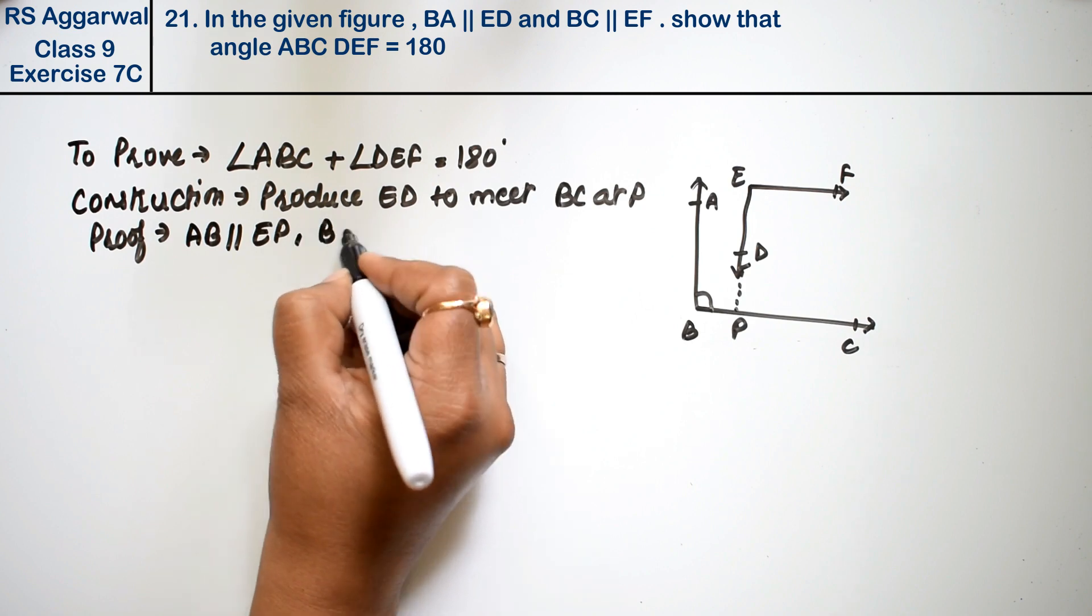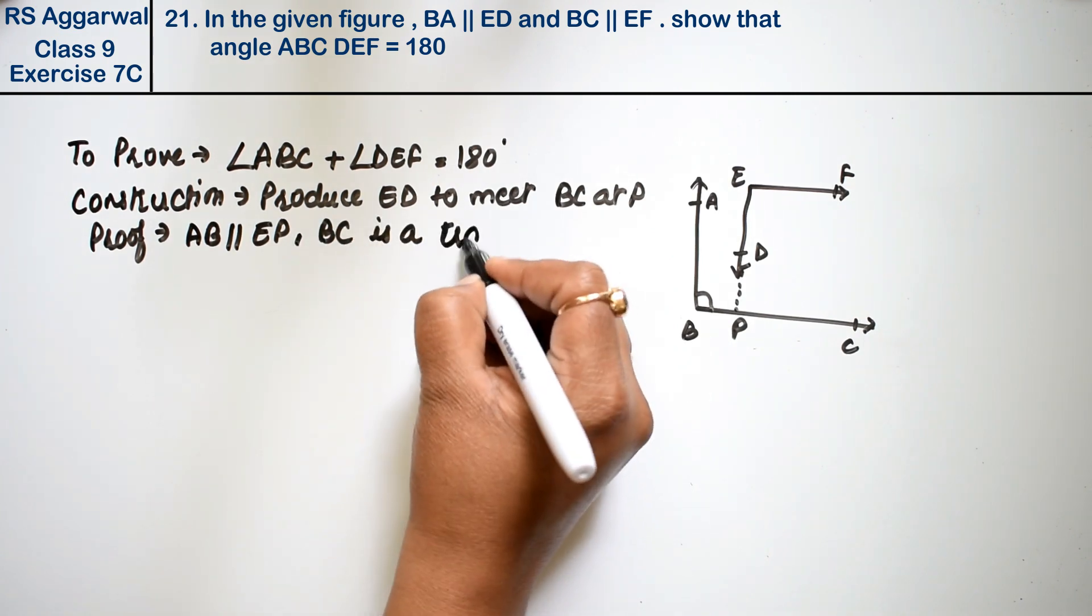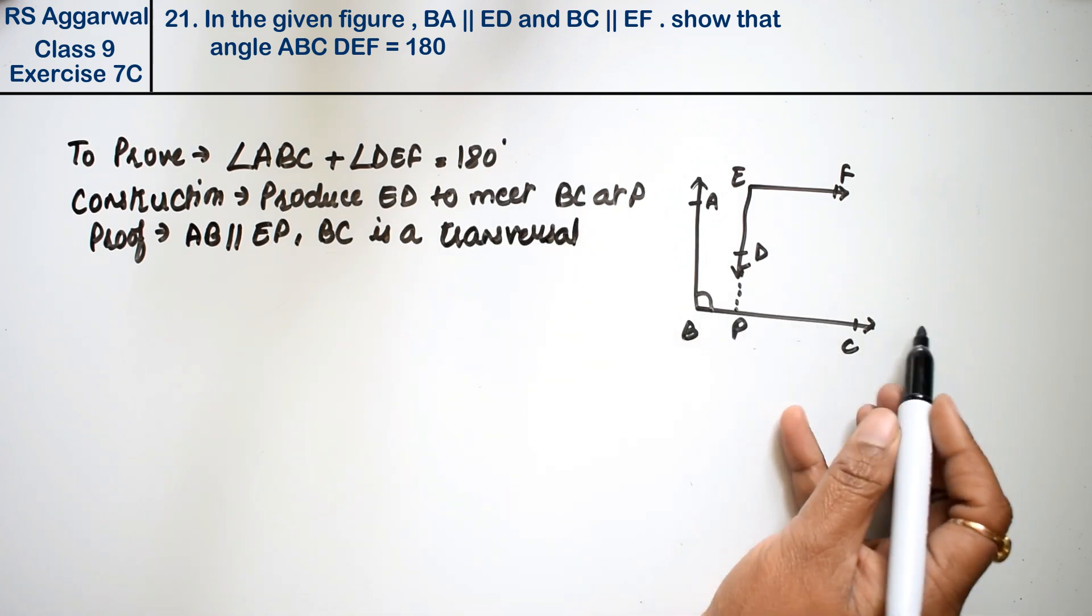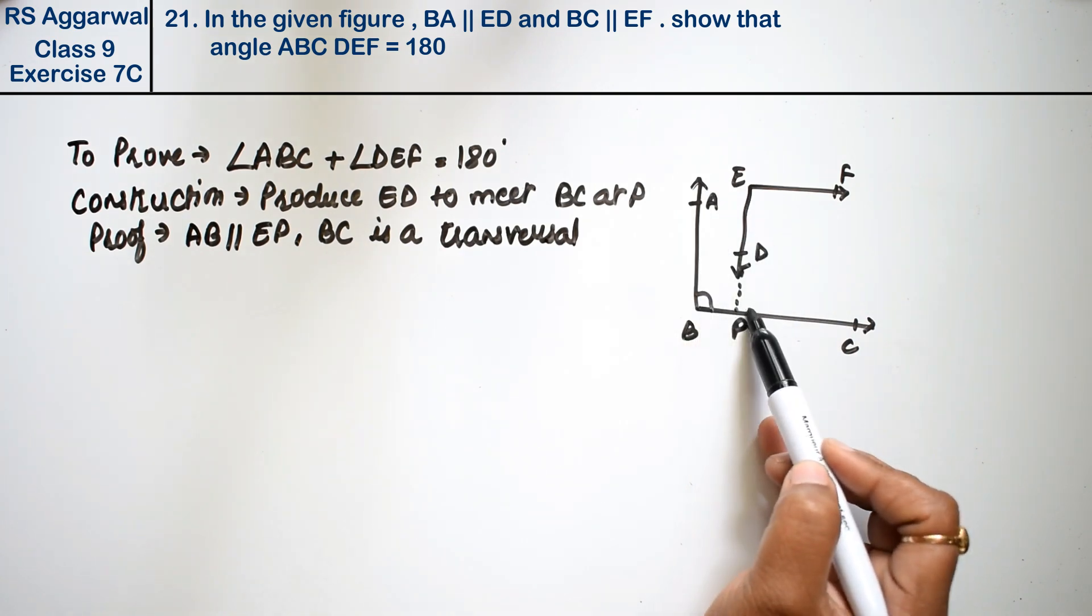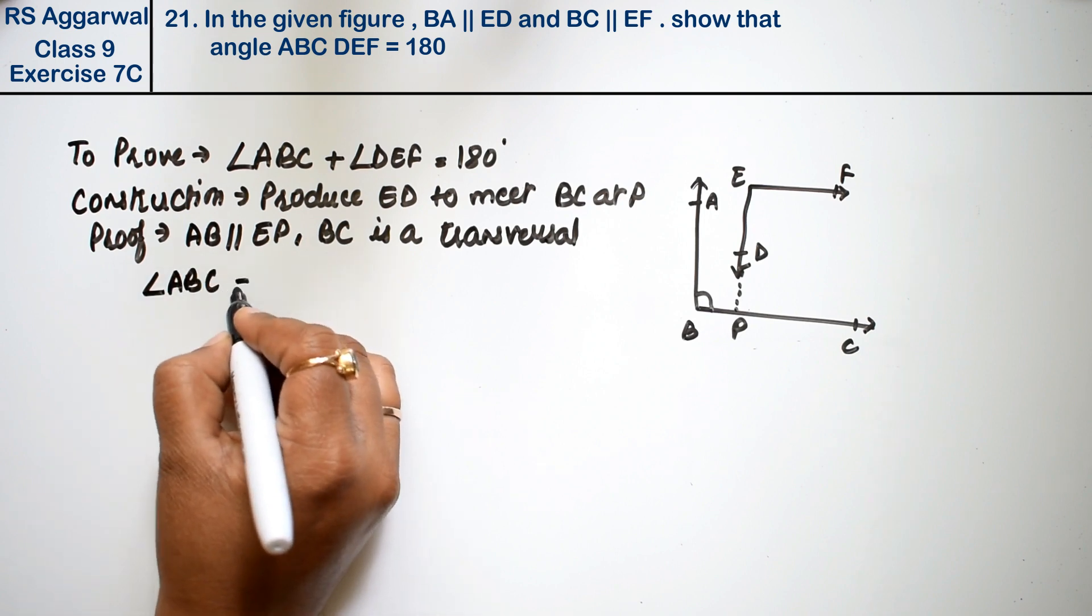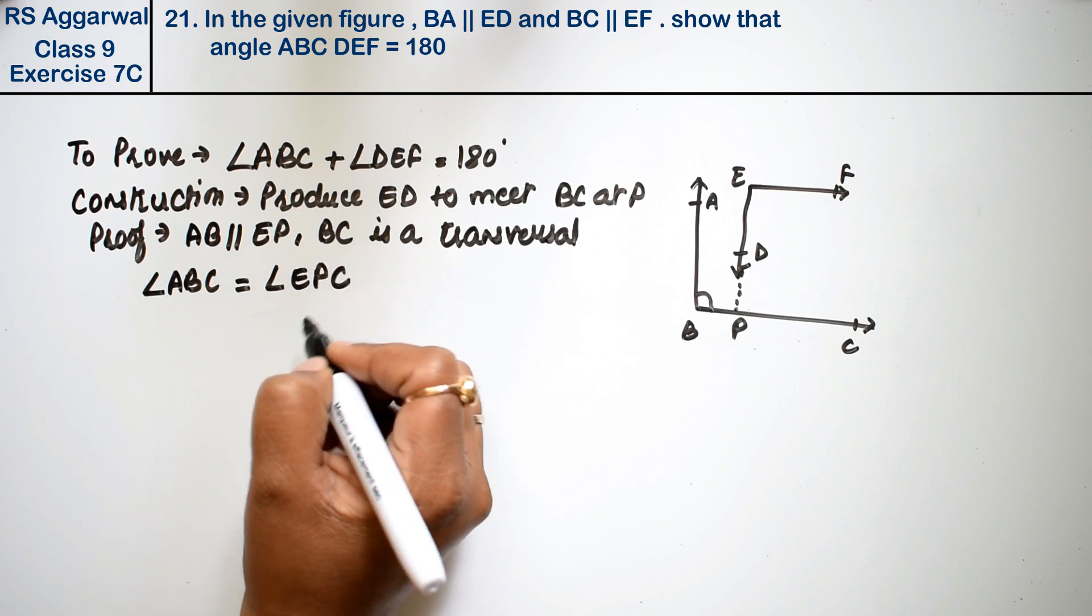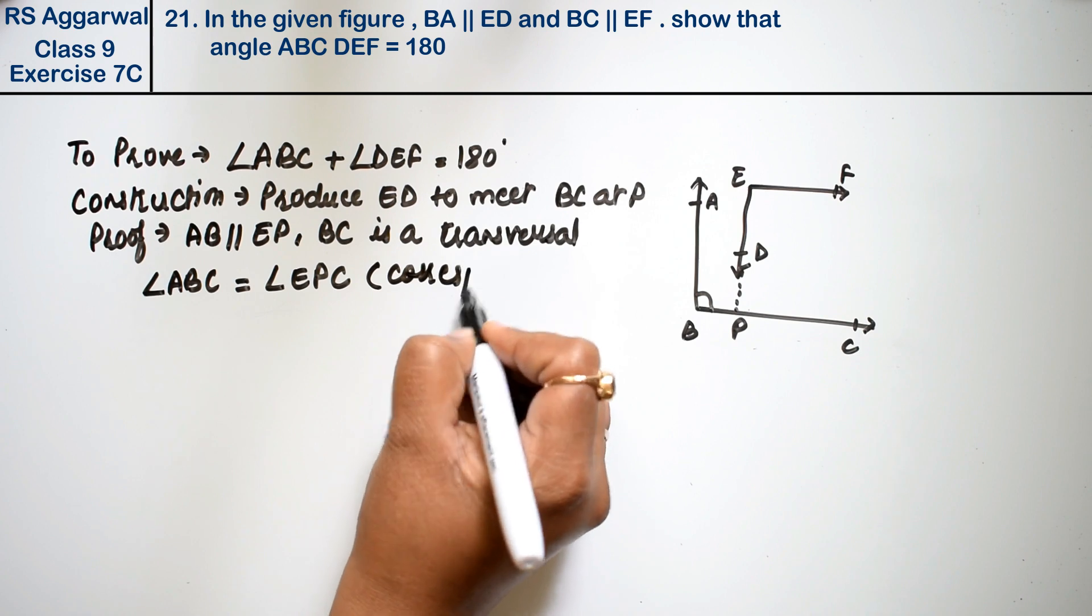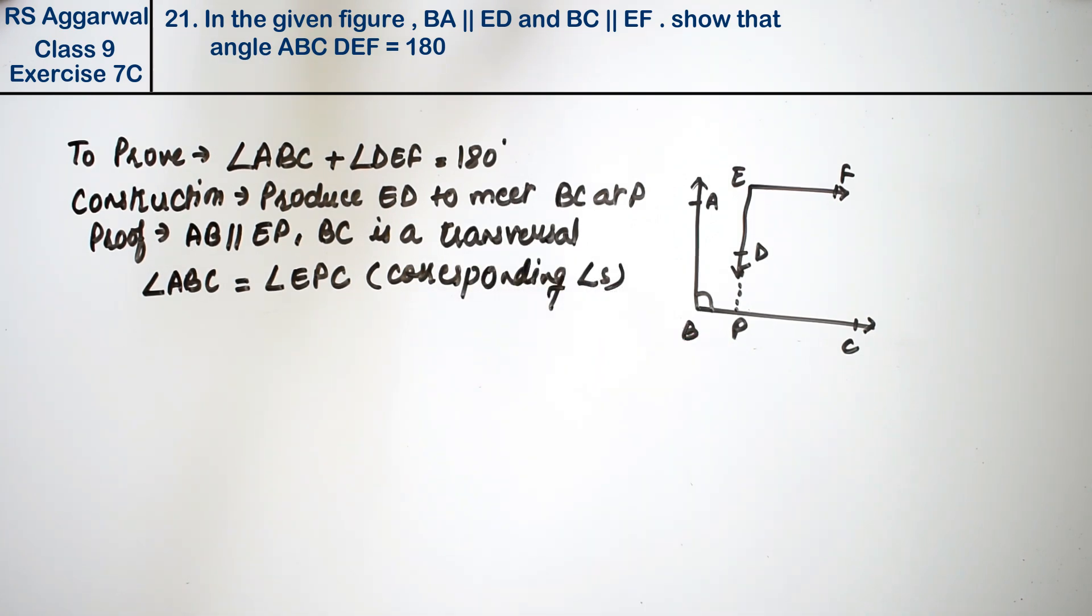BC is a transversal, and these two lines are parallel. So this angle equals this angle. Therefore, angle ABC equals angle EPC because these are corresponding angles.